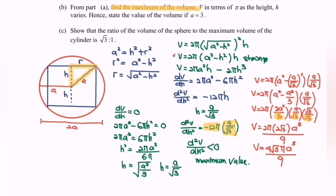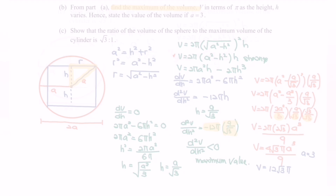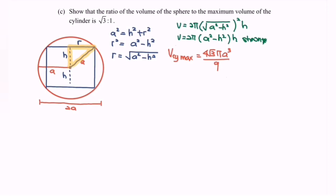When a = 3, substitute into the maximum volume formula to get V = 12√3 π. For the volume of the sphere, the formula is V = (4/3)πr³. Since the radius of the sphere is a, the volume of the sphere is V_sphere = (4/3)πa³.